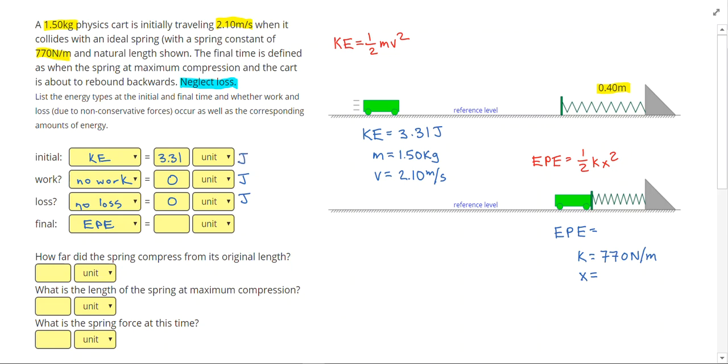So now I know that if there is no work and there's no loss, I don't gain any energy, I don't lose any energy. This kinetic energy is just turning into elastic potential energy. So I'll end up with 3.31 joules of elastic potential energy.